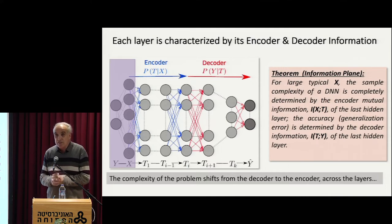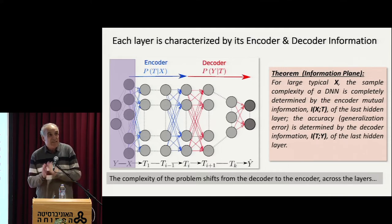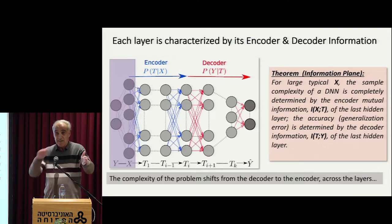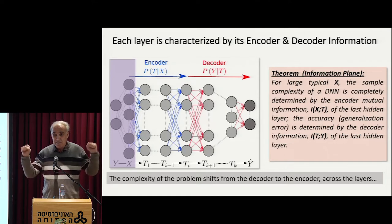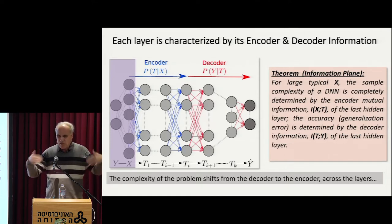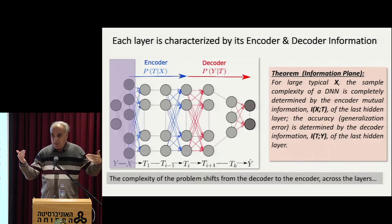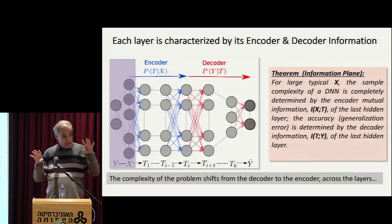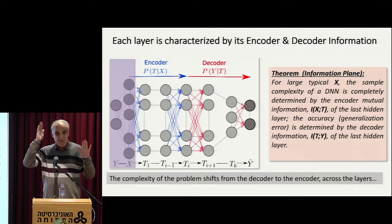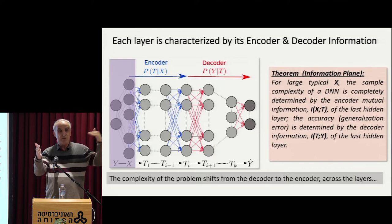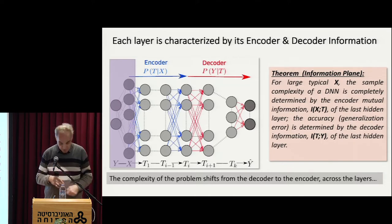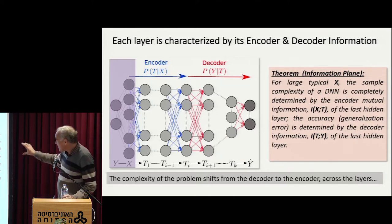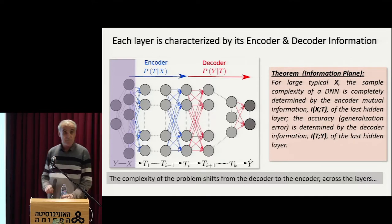The story everybody is interested in is: what is the optimal trade-off between sample size and accuracy? These are the two numbers you really care about. What is the number of examples you need for a certain accuracy or performance? I argue that these are the two things that asymptotically govern the picture. This is a huge reduction in complexity — I need to worry only about two numbers.